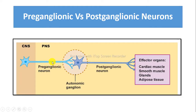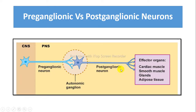These preganglionic neurons are all cholinergic neurons, whereas the postganglionic neurons involved in the sympathetic division are adrenergic, and neurons in the parasympathetic division are of the cholinergic type.